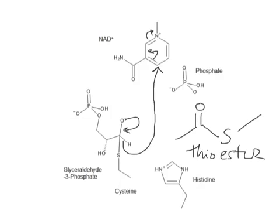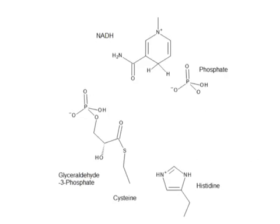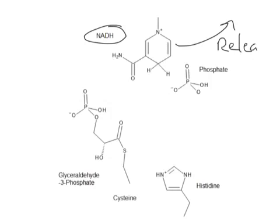Sulfurs are easier to break off than oxygens or nitrogens, so it's going to be easy for us to put this on and take it off. We've now formed NADH, which is one of our first products, and we'll release that. We have our thioester intermediate.